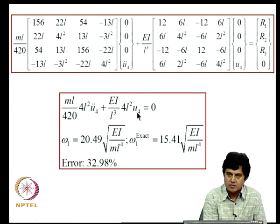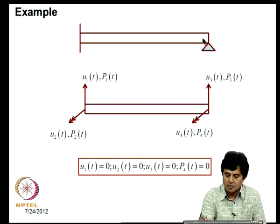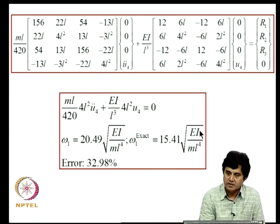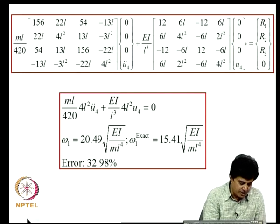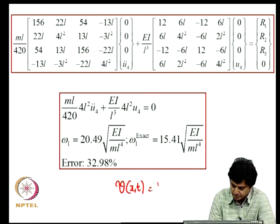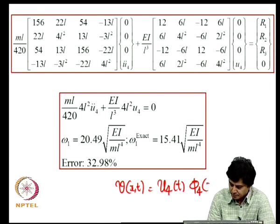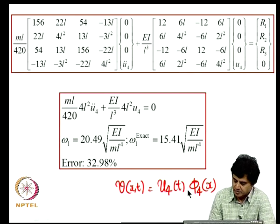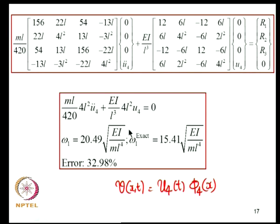In this single-degree-of-freedom approximation, the beam is treated as a single-DOF system with generalized coordinate U4. Once U4 is known, the displacement field for all X is given by V = U4 * phi4(X), where phi4 is the cubic polynomial already derived. The natural frequency is sqrt(K/M), giving 20.49 * sqrt(EI / (m*L^4)).